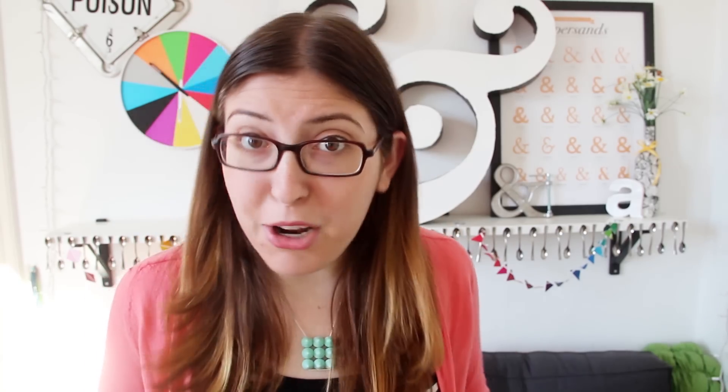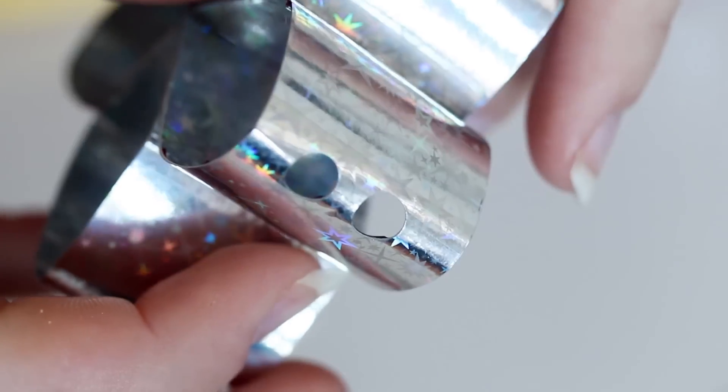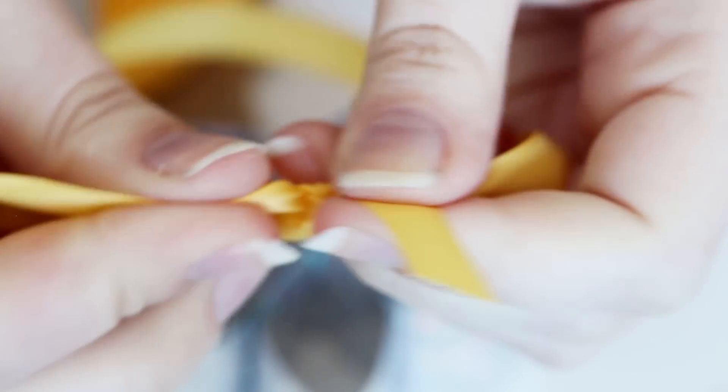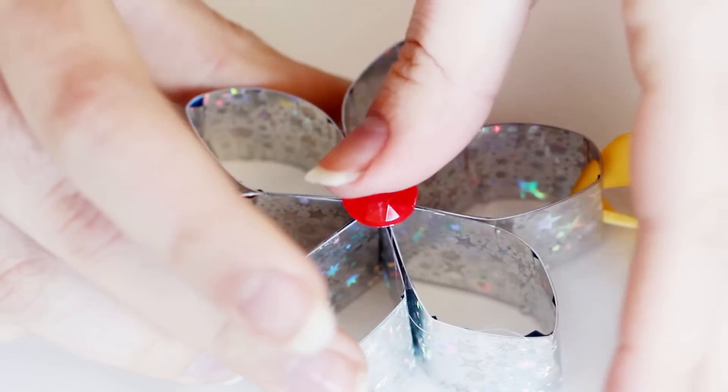At this point, you could glue on a magnet or just put it on a shelf for decoration, but I want to hang mine. So I'm just going to grab my hole punch and my ribbon and then punch two holes at the top of the flower. Then just thread the ribbon through and tie a simple knot at the end. And for one more final touch, I'm just going to hot glue some rhinestones right in the center.